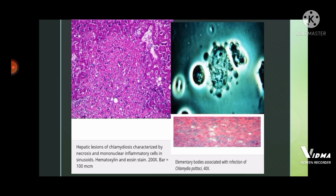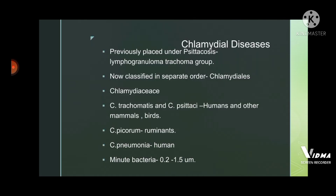The second picture shows elementary bodies associated with Chlamydia psittaci infection at 40x. Chlamydal disease was previously classified under psittacosis-lymphogranuloma-trachoma group, now classified in the separate order Chlamydales, family Chlamydiaceae. The two important chlamydal pathogens are Chlamydia trachomatis and Chlamydia psittaci, affecting humans and other animals including birds.